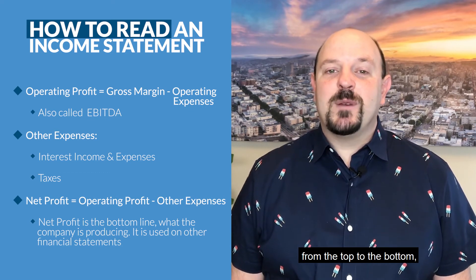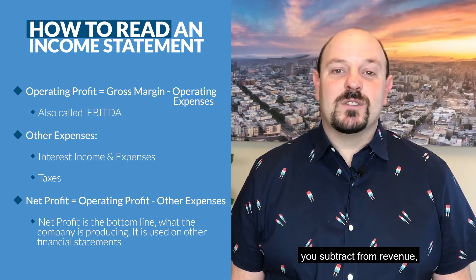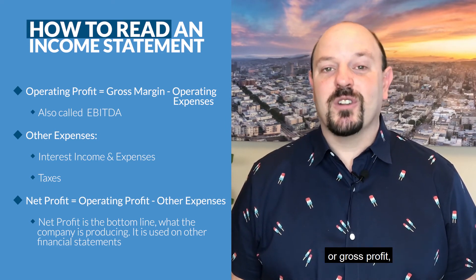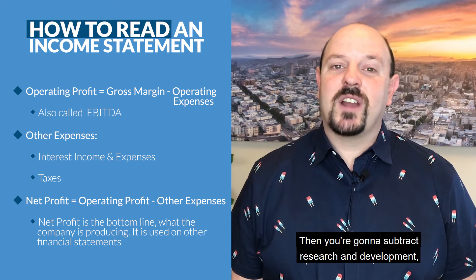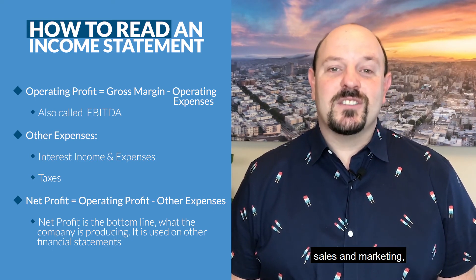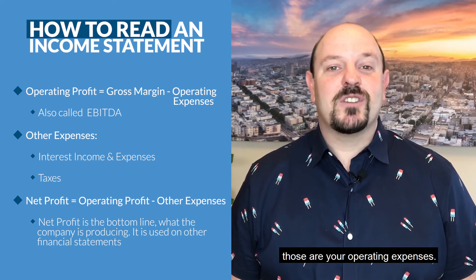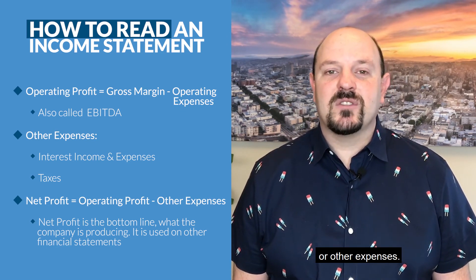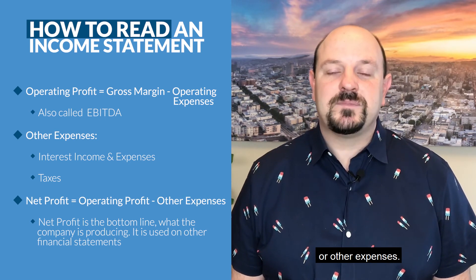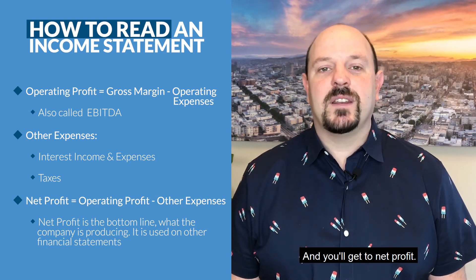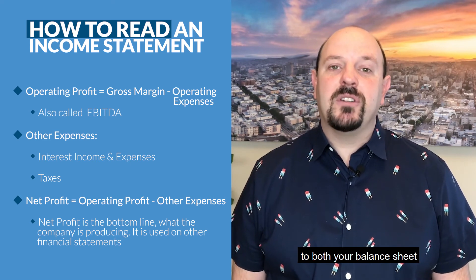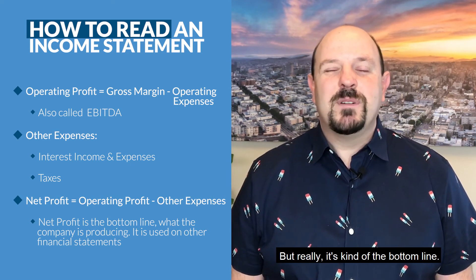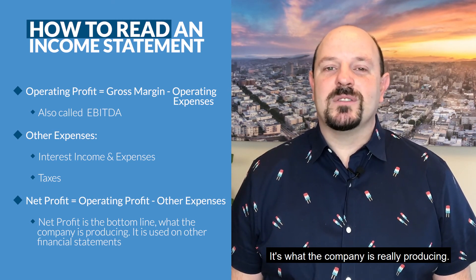So again, from top to bottom: you've got revenue. You subtract your cost of goods sold, which gets you to gross margin or gross profit. Then you subtract research and development, sales and marketing, and general and administrative — those are operating expenses — and you get down to operating income. Then you subtract interest expenses or other expenses and you get to net profit. Your net profit feeds into both your balance sheet and your cash flow statement, which we'll talk about in other videos. Really, it's the bottom line — it's what the company is truly producing.